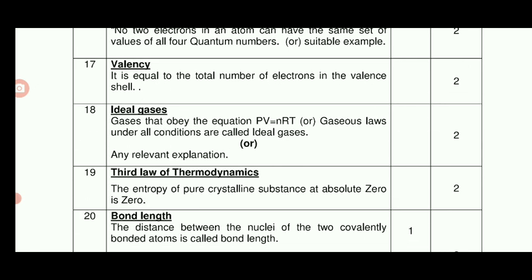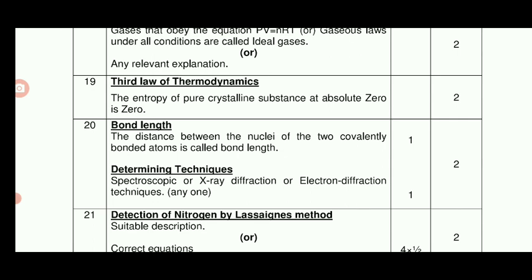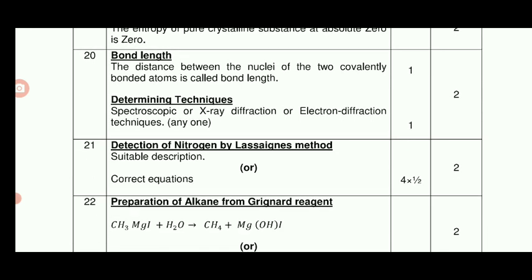Ideal gas: gases that obey the equation PV or the gaseous law under all conditions are called ideal gases — give any relevant example to get 2 marks. Third law of thermodynamics: the entropy of a pure crystalline substance at absolute zero is zero. Bond length: the distance between the nuclei of two covalently bonded atoms is called bond length. Determining technique: spectroscopic or X-ray diffraction or electron diffraction — one mark each.